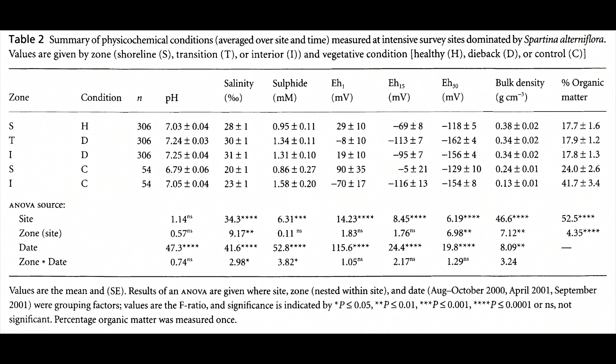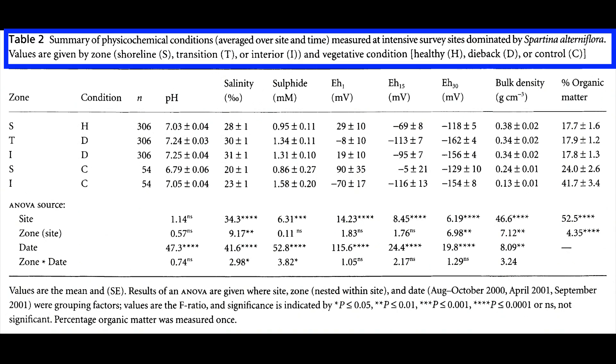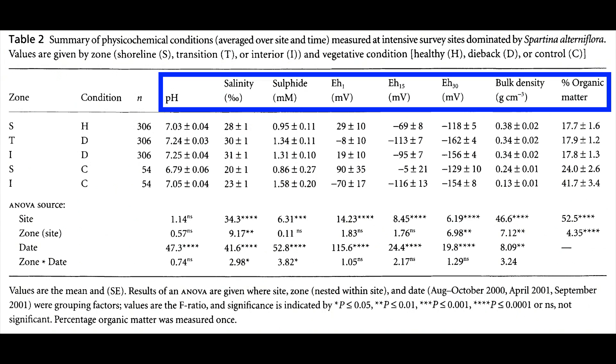Let's look at tables first. Each table is numbered one, two, three, and has a title that goes at the top. In this example, the soil variables measured are listed across the top and the grouping factors, zone and condition, down the left side. This allows a reader to easily compare zones and conditions for each soil variable.